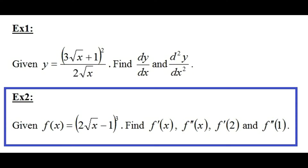We have another example. In example number 2, f(x) = (2√x - 1)³. We need to work out f prime — differentiating once — and f double prime — differentiating twice — and then calculate the values of f prime(2) and f double prime(1).